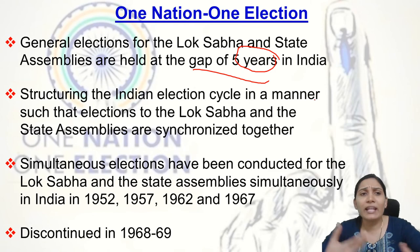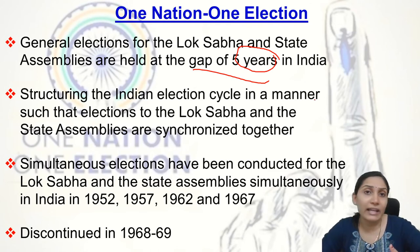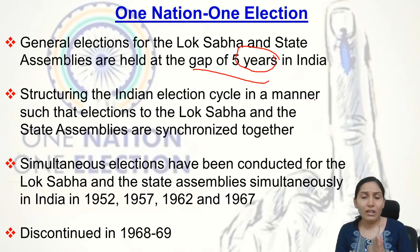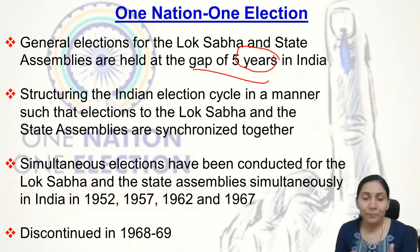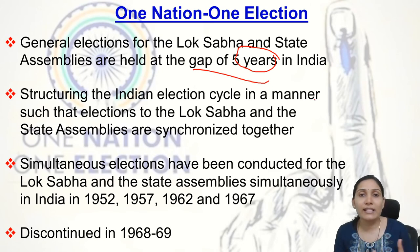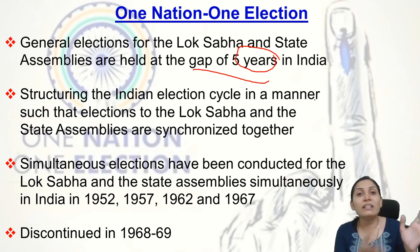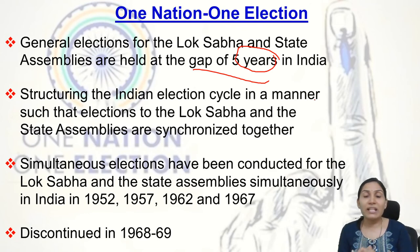One Nation One Election means structuring the Indian election cycle so that elections to Lok Sabha and State Assemblies are synchronized together. Suppose Lok Sabha elections are held in 2023 — then all state assembly elections would also be held at the same time. The aim is to synchronize all these elections. The reason for the current gap is coalition governments — many times governments at both the central and state level fell, creating this staggered cycle.